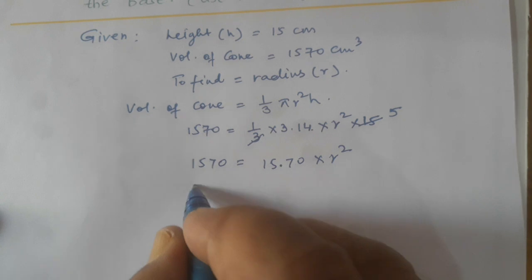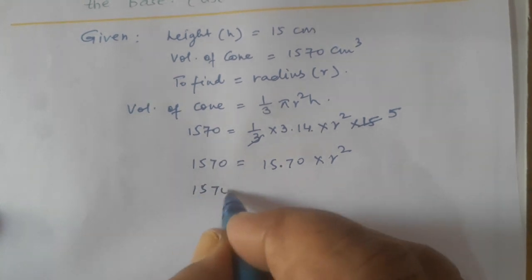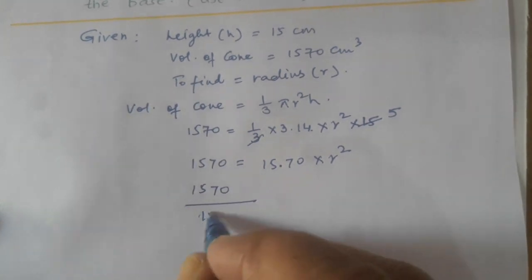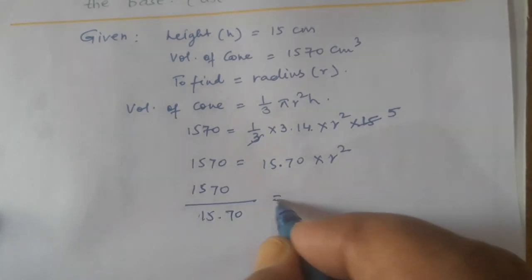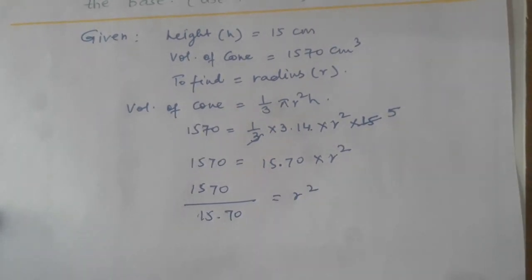Now what will we do? This multiplies with r², so divide by it. This becomes 1570/15.70 = r².